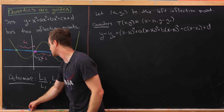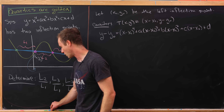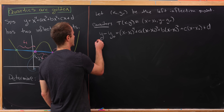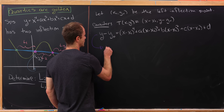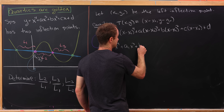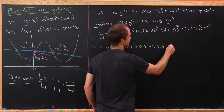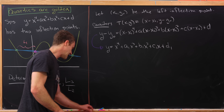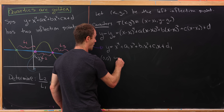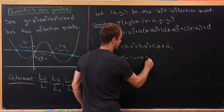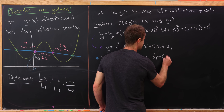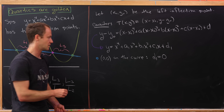This translation corresponds to taking the left inflection point and putting it at the origin. Expanding and renaming, we have y = x⁴ + a₁x³ + b₁x² + c₁x + d₁. Now we use structural facts: since (0, 0) is on the curve, it must satisfy the equation, which tells us d₁ = 0.